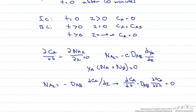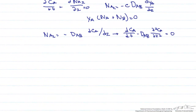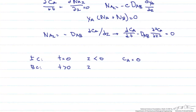Again we need one initial condition and two boundary conditions, but now in the opposite direction since herbicide goes into the soil in the downward z direction. Initial condition: at t = 0 and any z < 0, the concentration of herbicide is 0. Boundary condition 1: at t > 0 and z = 0, C_A equals the surface concentration — shared with the previous case. Boundary condition 2: at t > 0 as z approaches minus infinity, C_A equals 0.